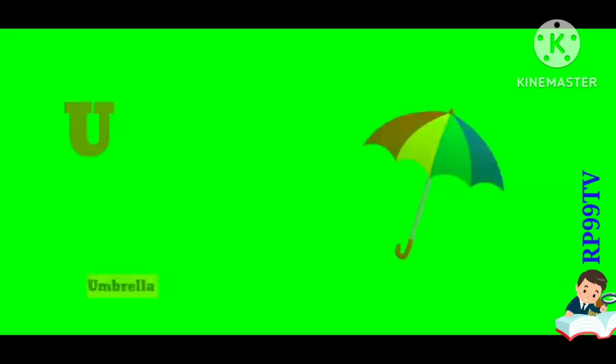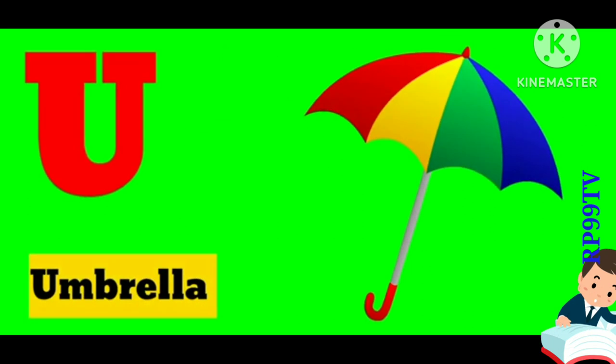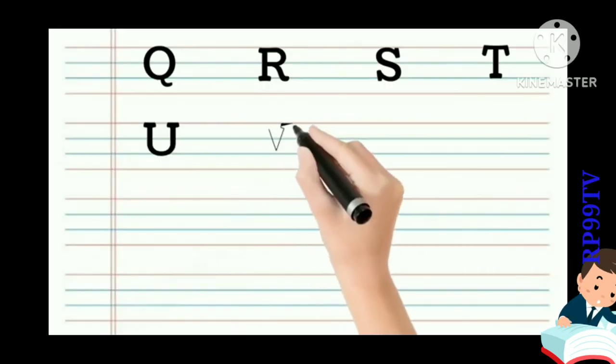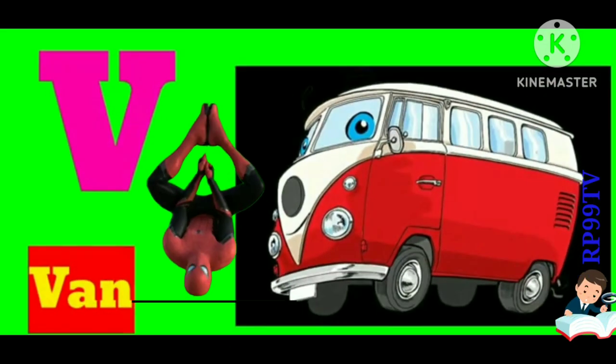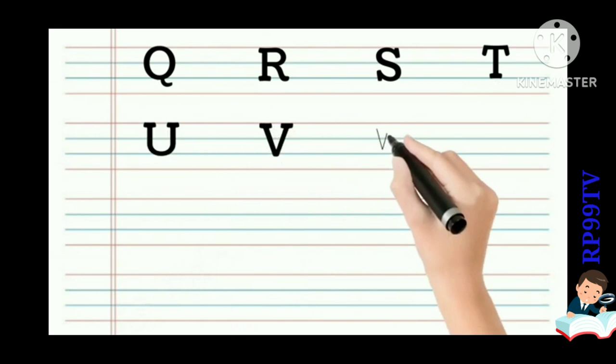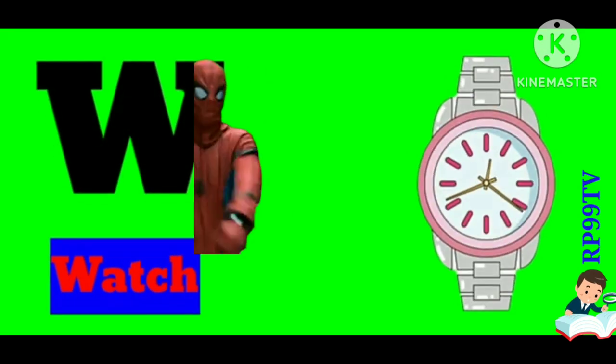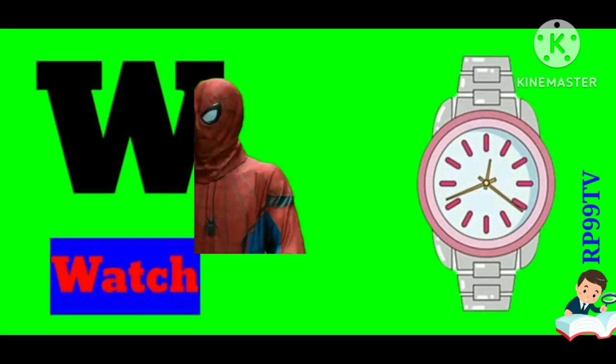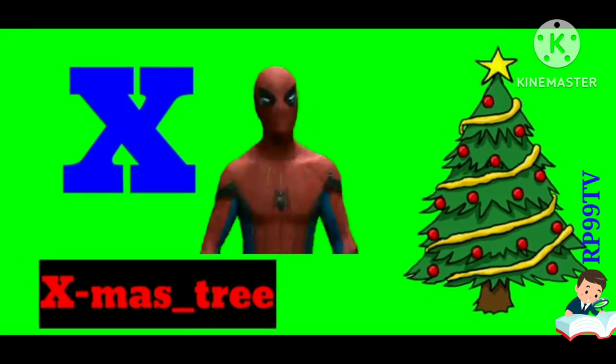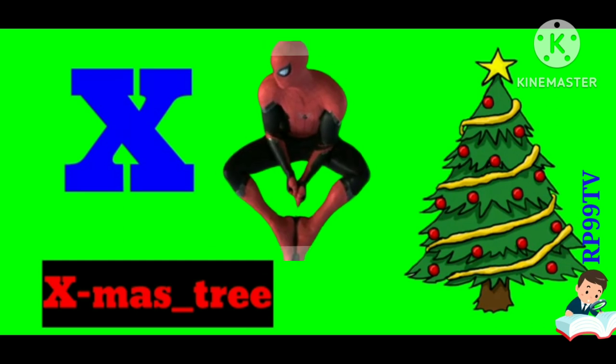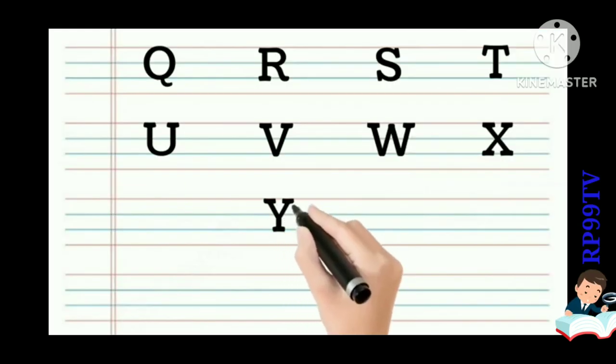U. U for Umbrella. U for Umbrella. V. V for Van. V for Van. W. W for Watch. W for Watch. X. X for Xmas Tree. X for Xmas Tree.